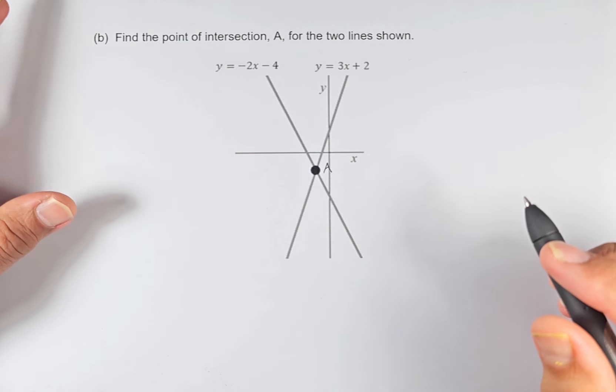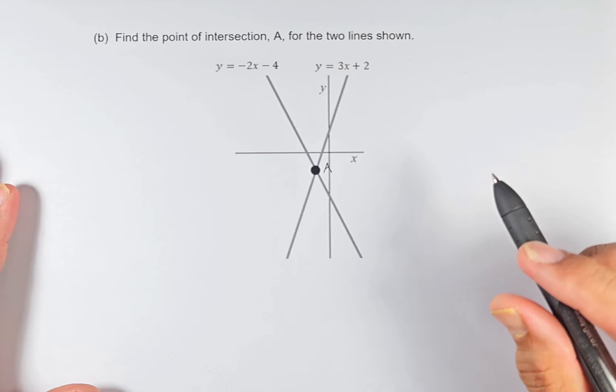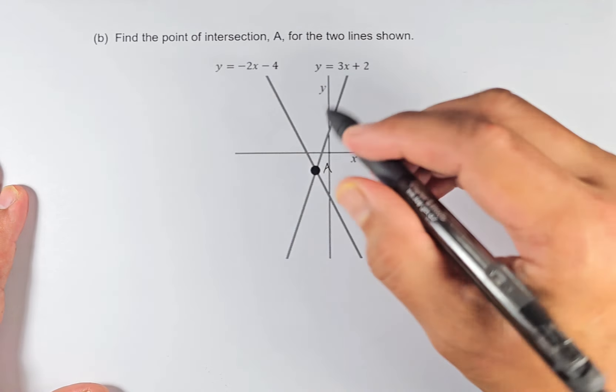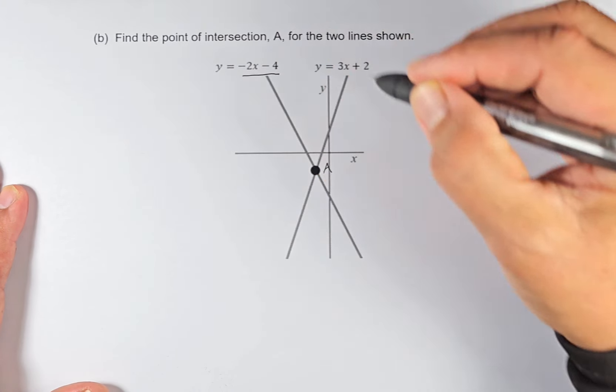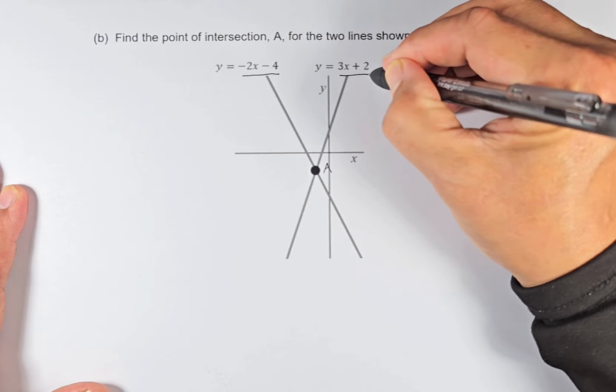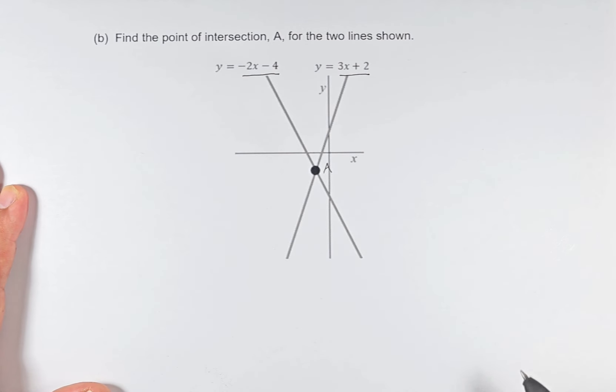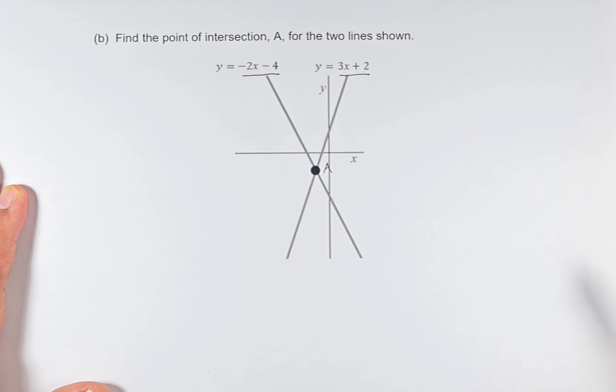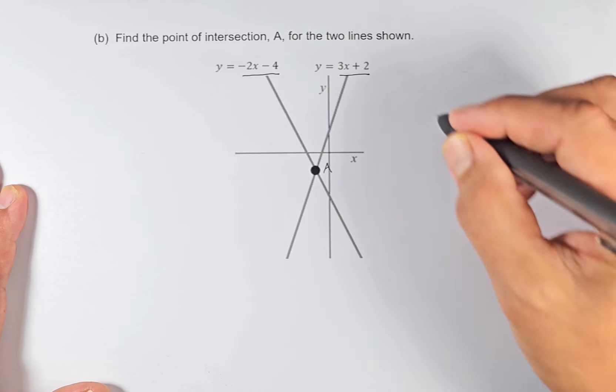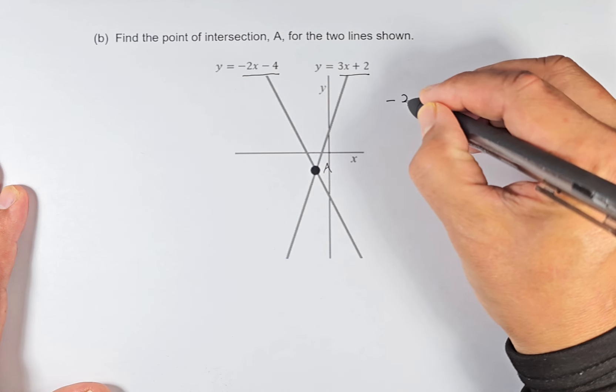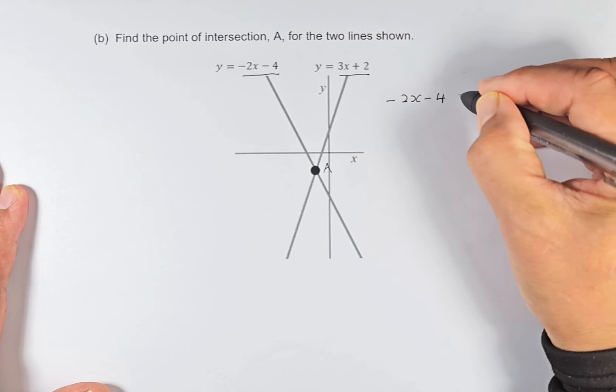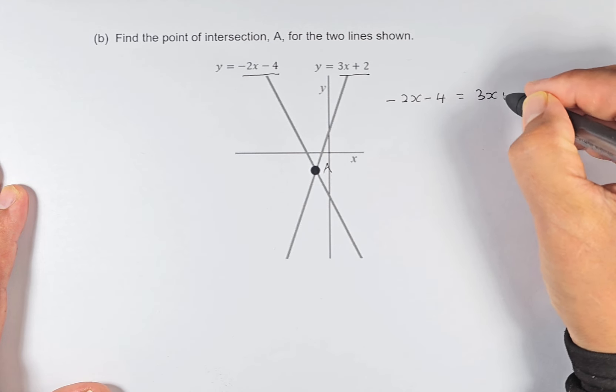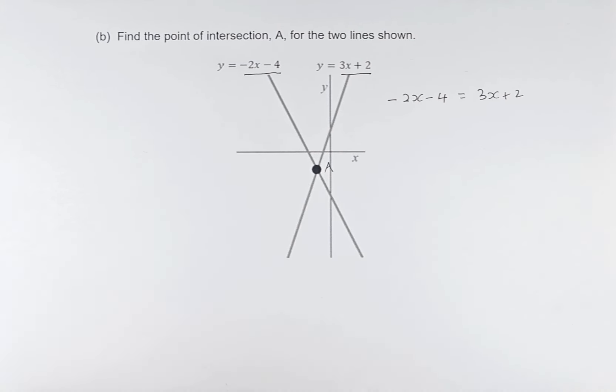When you have this equation equal to that equation, you can see that y equals -2x - 4 and y also equals 3x + 2. Because they are both y, you can say that this equals that. That's why we're going to solve the simultaneous equation. So -2x - 4 equals 3x + 2. They can be equal because both of them equal y.